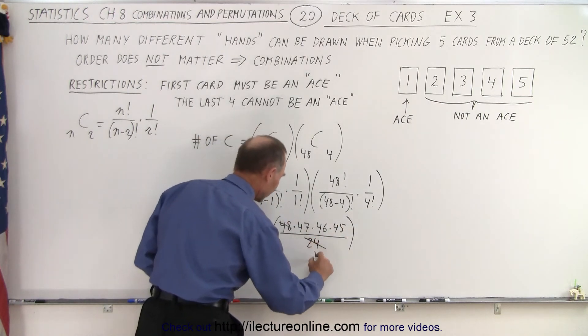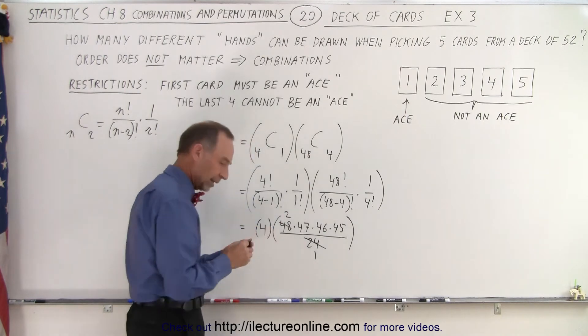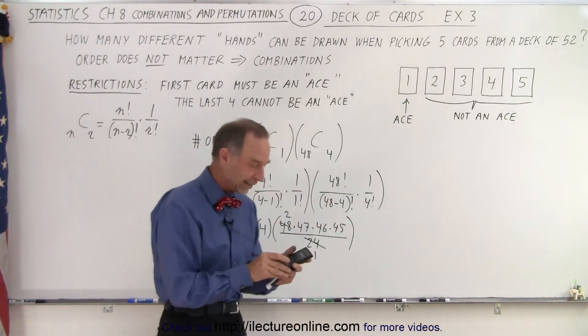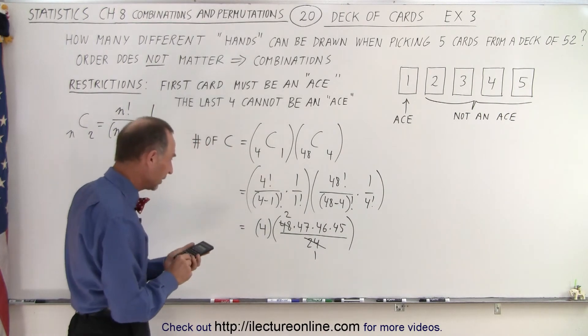Notice that the 24 and the 48 cancel out. I need a calculator here. It's hiding underneath my napkin there.